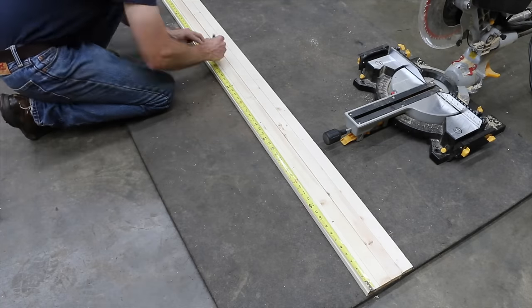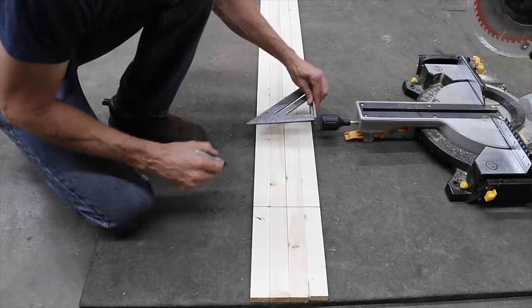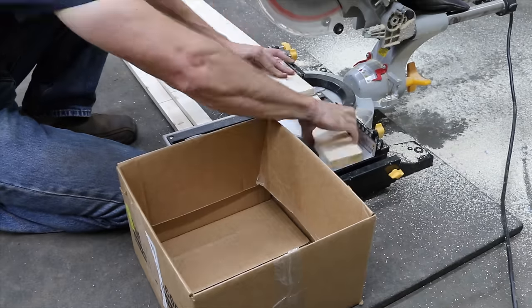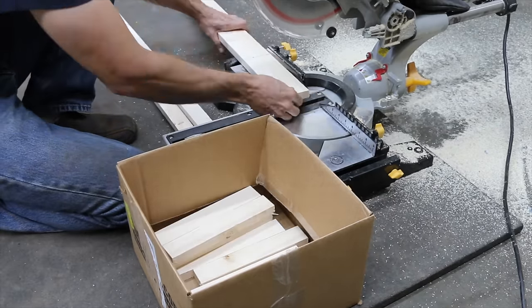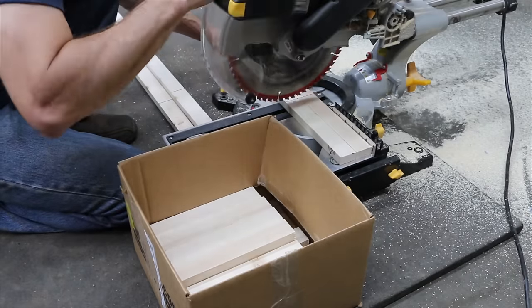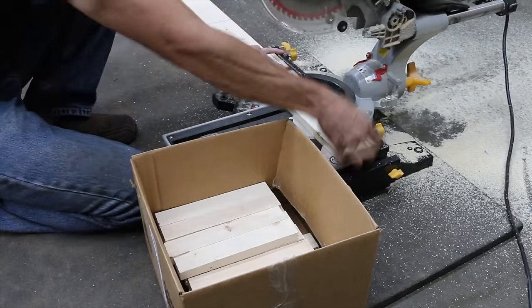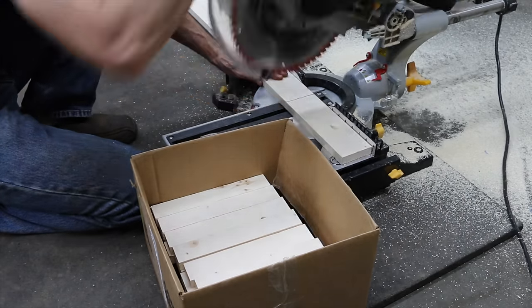To determine which construction adhesive is best, we'll be conducting four separate tests along with multiple samples of each test. In the first test, we'll be measuring shear strength using 2x4s. In the second test, we'll be measuring tensile strength using 1x2s, all cut from the same stack of lumber.